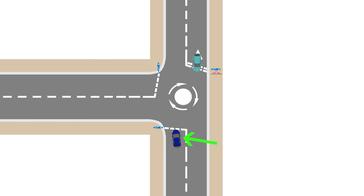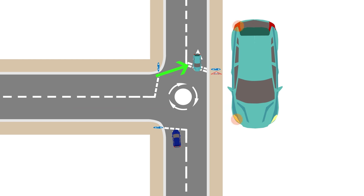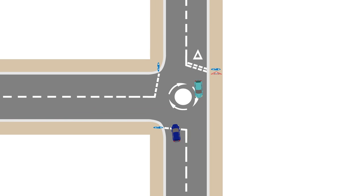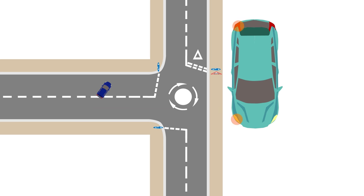Mini roundabouts are some of the most important places to use your signals correctly. Not signalling on a mini roundabout is likely to cause an accident. This dark blue car only needs to wait for the oncoming light blue car if it's signalling to turn right around the mini roundabout. But as the light blue car is not signalling, the dark blue car makes the correct decision to go — but the light blue car turns right anyway. Now, how was the dark blue car supposed to mind-read the light blue car's intentions? Hence why signalling is very important.